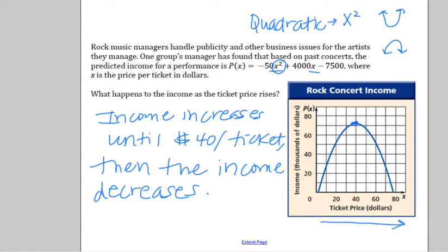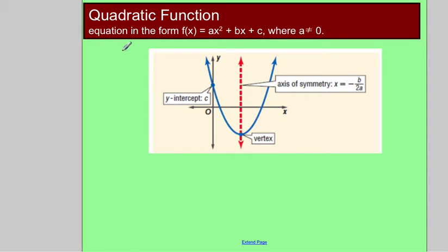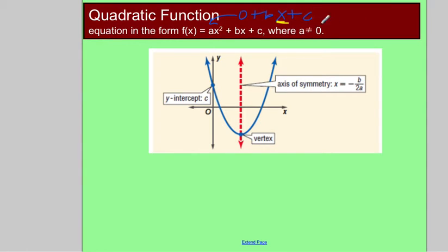Let's look at quadratic functions and some parts we need to remember. A quadratic is of the form ax² + bx + c, where a cannot be zero. The reason a can't be zero is if I plug in zero for a, I would be left with just bx + c, and my highest term would be x — that's linear. So that's why a cannot be zero; it has to have that x² term.